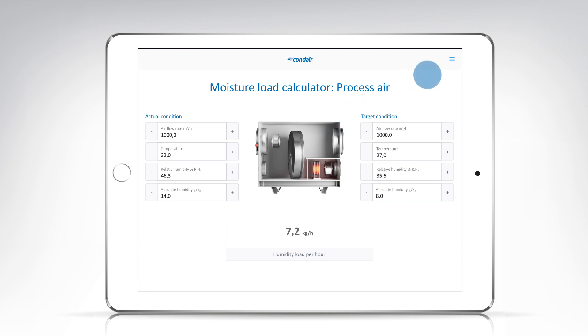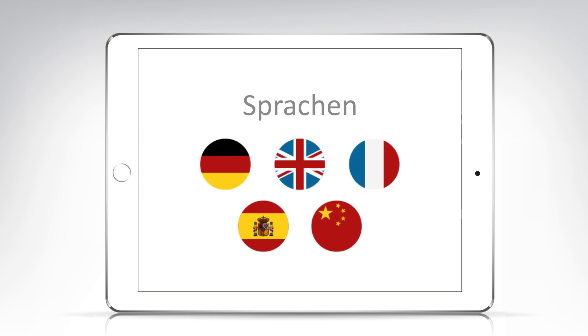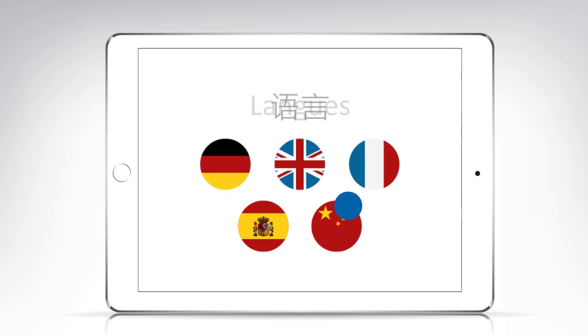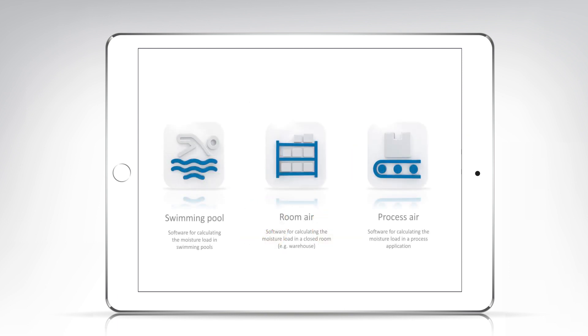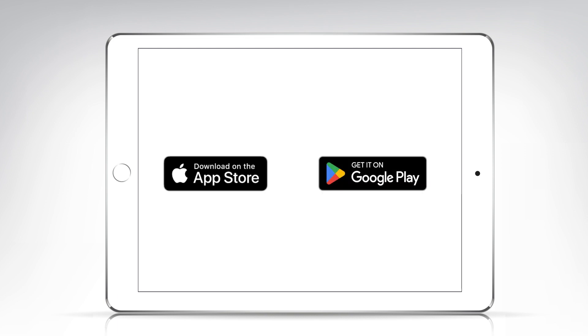In the menu of the app, you will also find a language selection, via which, besides German, Spanish, Mandarin, French, and English are also available. Condair's moisture load calculators can be used on a tablet or smartphone. They are available free of charge as an iPhone app in the App Store and as an Android app on the Google Play Store.